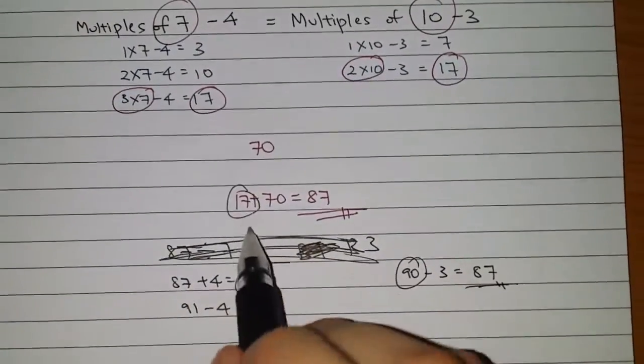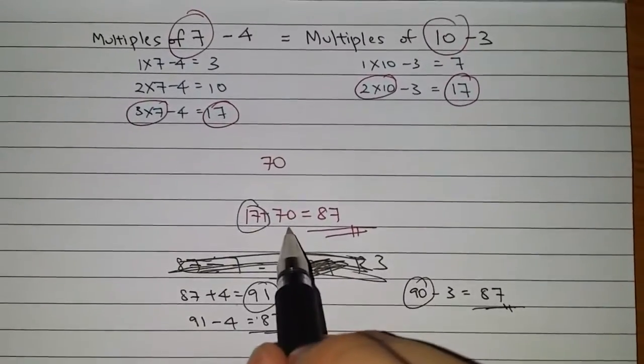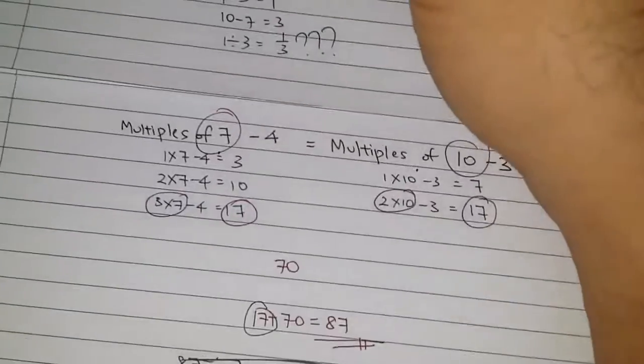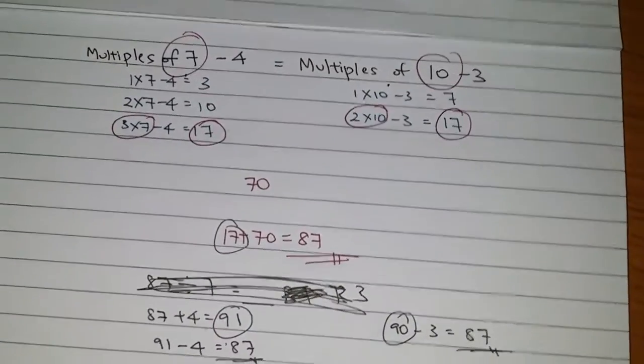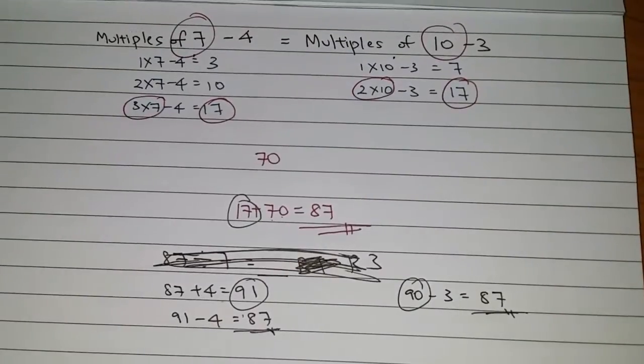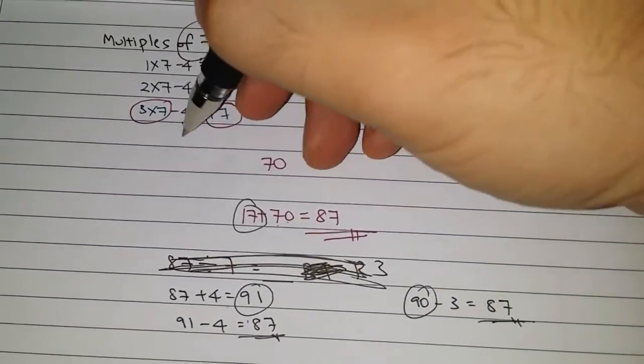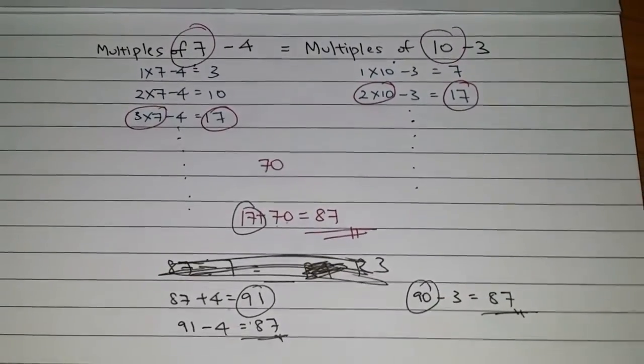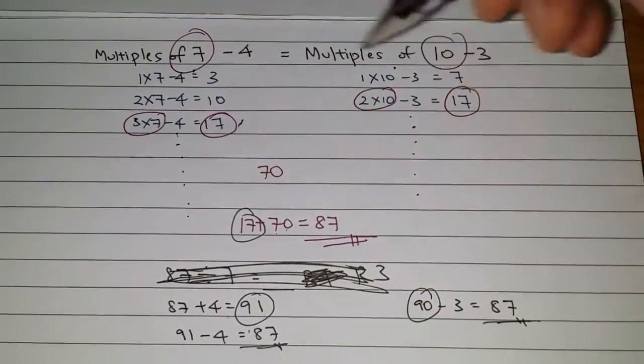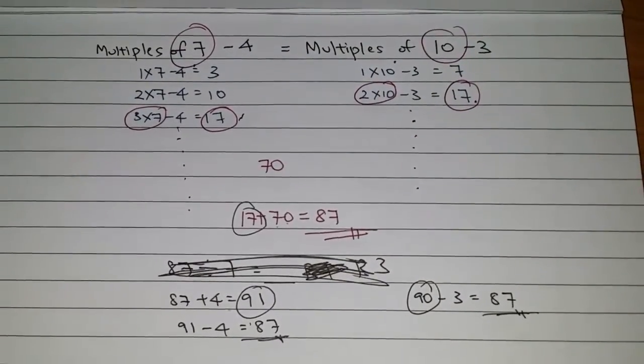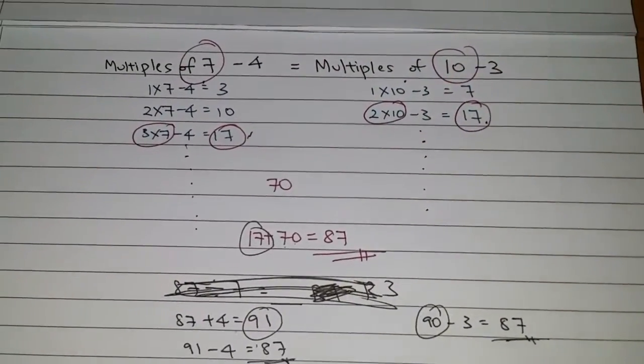So, what you can do here is that find the least possible number, then multiply, or add the common multiple until you get more than 50. Alright? So, for this question, the plus 70 is this reason why. Otherwise, you're going to write down all the way, all the multiples, all the multiples until you get 87, which is quite ridiculous. So, find the smallest possible answer that is same. Add by the smallest common multiple of both 7 and 10 to get the answer.